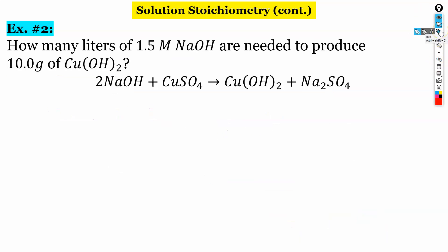All right. In our second example, it says how many liters of a 1.5 molar NaOH are needed to produce 10 grams of Cu(OH)2. So we're looking at copper hydroxide and sodium hydroxide. So this time we're given grams. So we're going to need to convert our grams to moles. And then we'll take our moles and do a mole ratio. And then finally, we'll use the molarity equation like we did previously to find our liters.